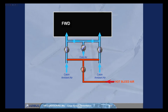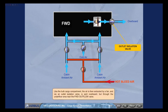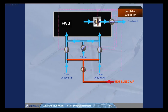Like the bulk cargo compartment, the air is then extracted by a fan, and via an outlet isolation valve is sent overboard through the underfloor area near the forward outflow valve. The ventilation controller controls the valves and the fan. Note: if installed, compartment heating is not available when the forward cargo door is open.